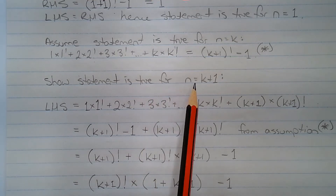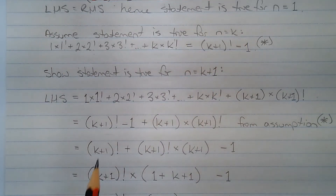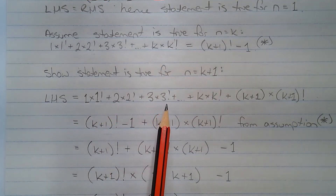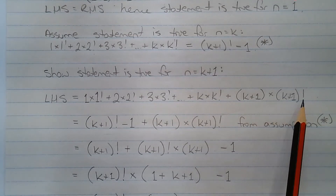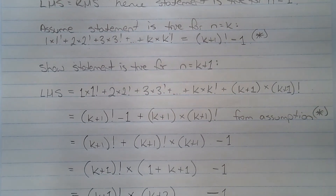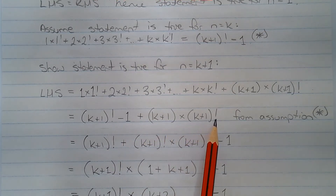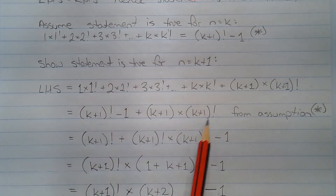Next, we show the statement is true for n equals k plus 1. From the left-hand side of the assumption, that equals 1 multiplied by 1 factorial, plus 2 multiplied by 2 factorial, plus 3 multiplied by 3 factorial, plus dot dot dot, plus k multiplied by k factorial, plus the next term along, which is k plus 1 multiplied by k plus 1 factorial. This part of the series can be replaced with k plus 1 factorial minus 1, using the assumption, to simplify the series.